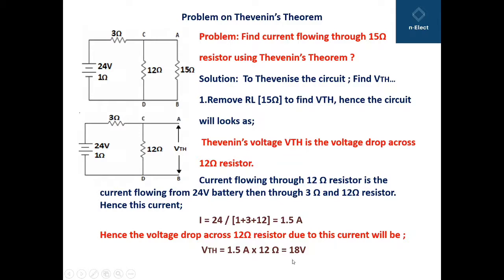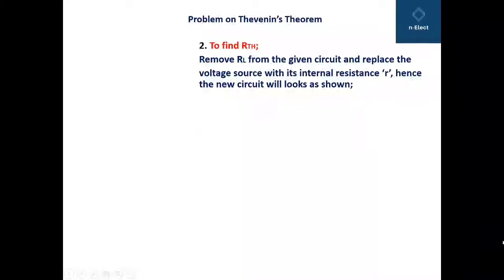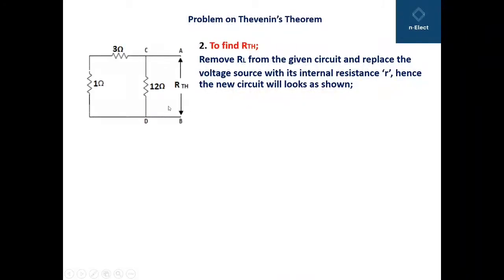Now moving to the second step: finding RTH. Remove RL from the circuit and replace the voltage source with its internal resistance. The battery is replaced by its 1 ohm internal resistance and the new circuit is redrawn. Starting from A going to C, we find 3 ohm and 1 ohm are in series giving 4 ohm, which is in parallel with the 12 ohm resistor.